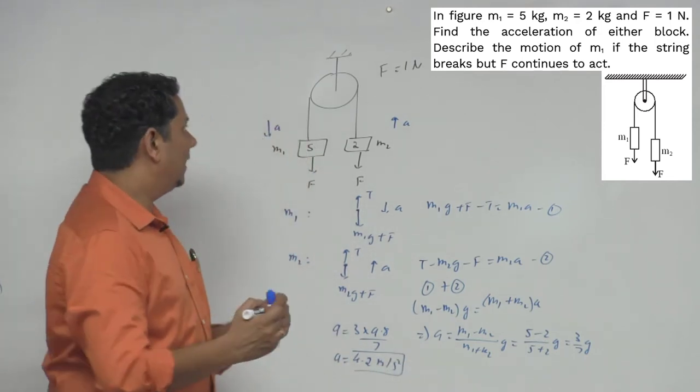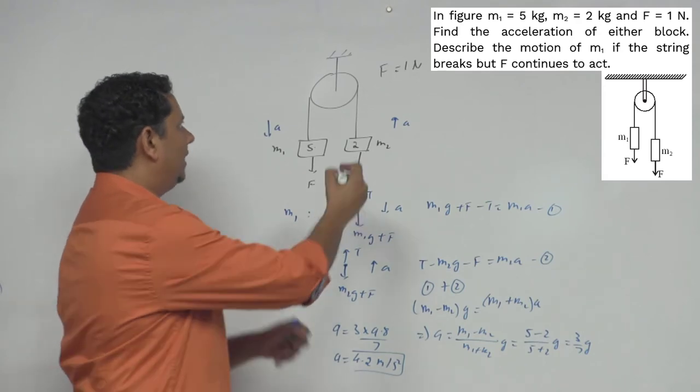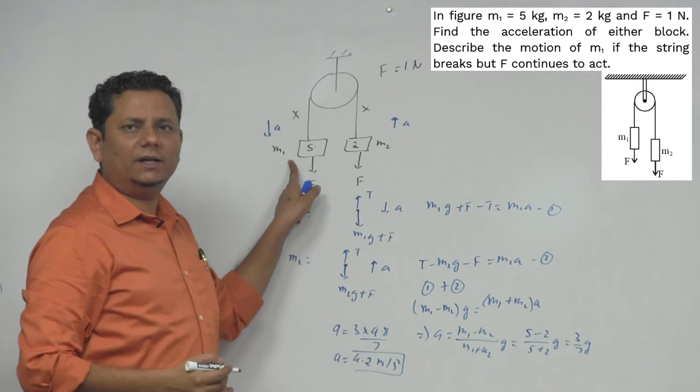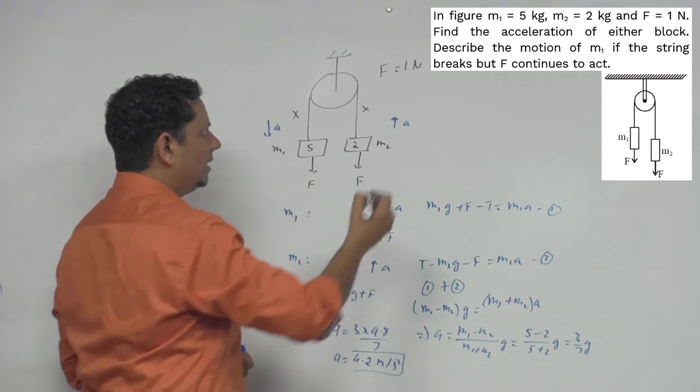Now second part says suppose your string here breaks. In that case we have to find the acceleration of m1.